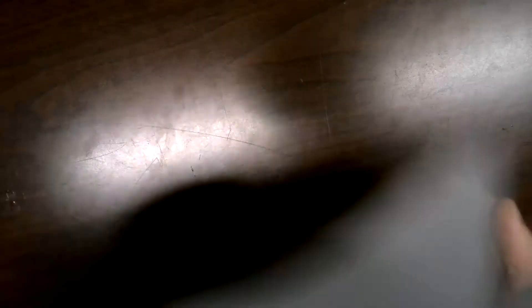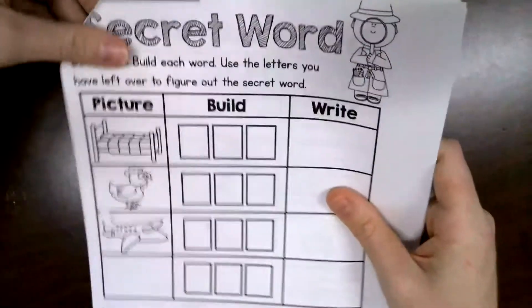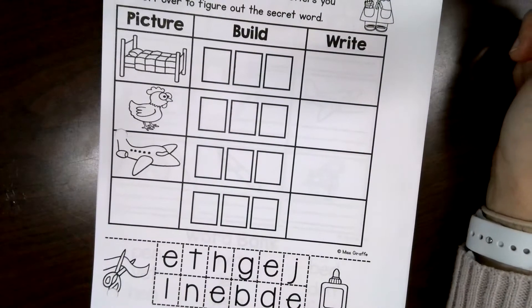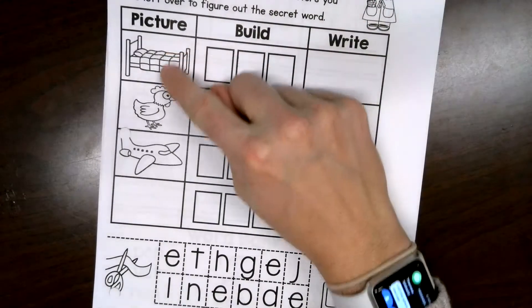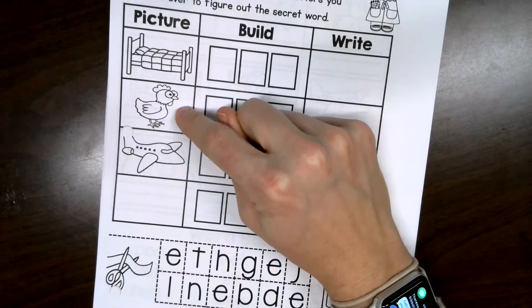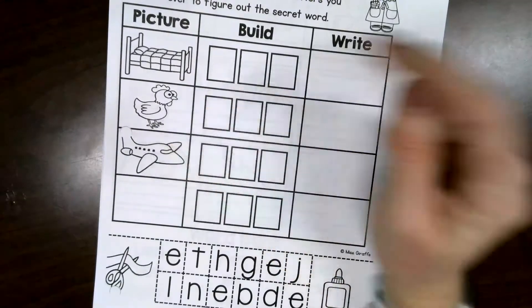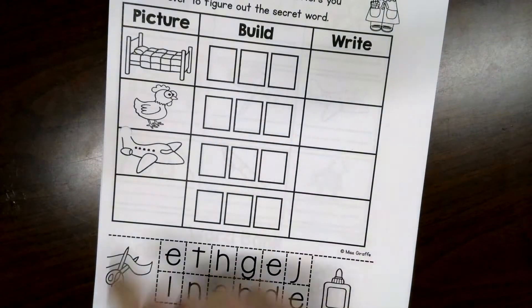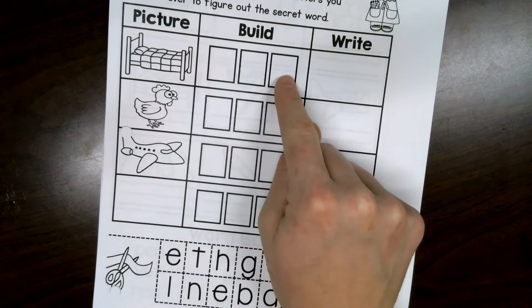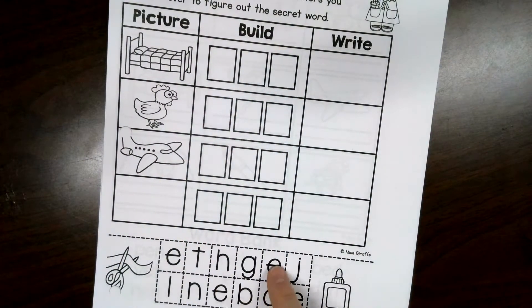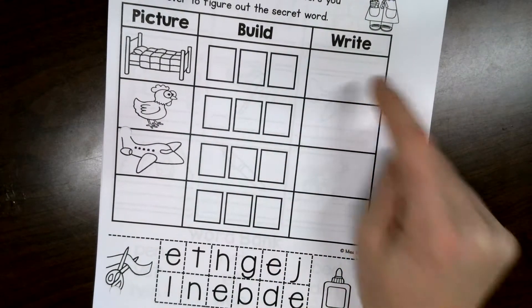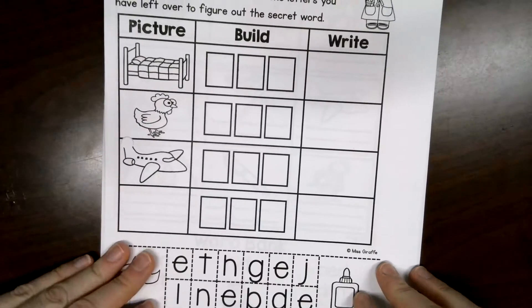The next page, we've done one of these before, I believe. Yes, I think this week we did a couple. And we have our pictures. We have a bed, pen, jet. You're going to cut out these letters to make, spell them in these boxes. So, this is bed. B-E-D. So, I'd get the B, E, and D. And I'd glue them there. And then you're going to write the word in this box. You can pause the video here and do it and then hit play again when you're ready to move on.